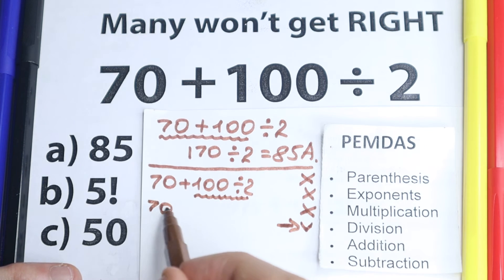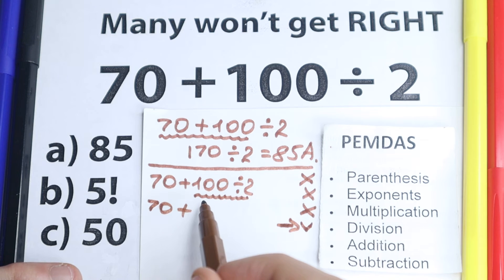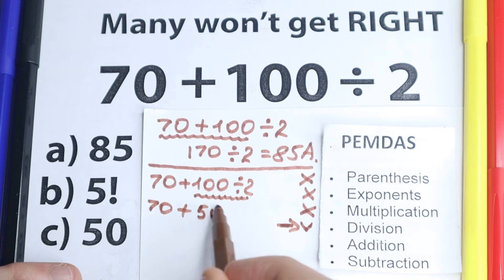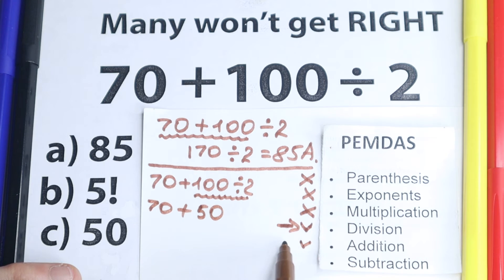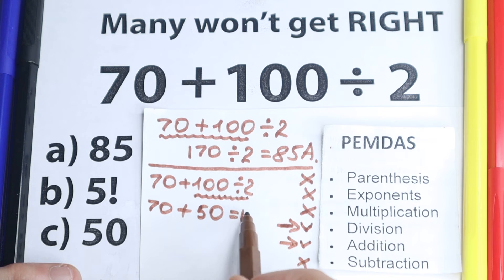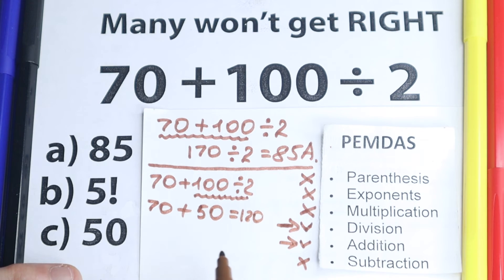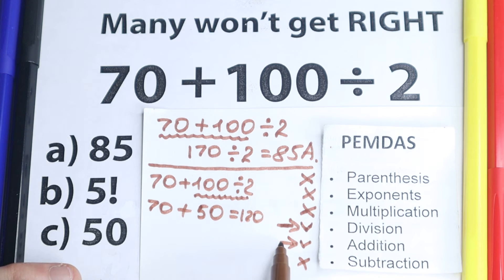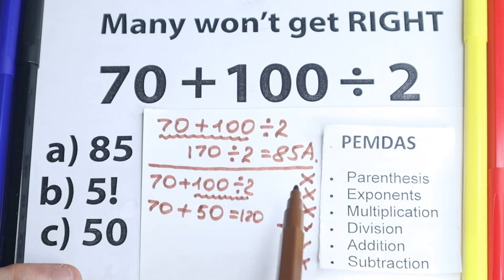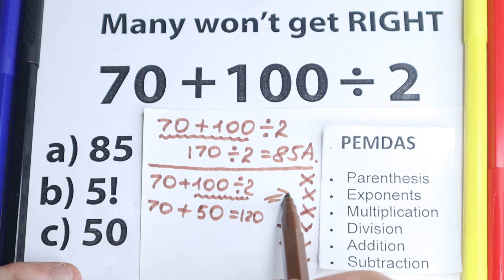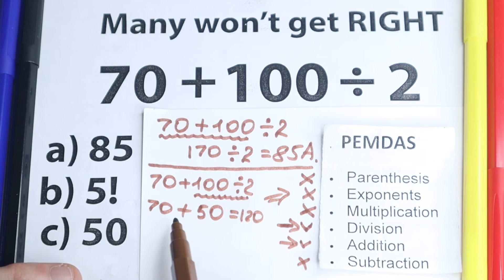100 divided by 2 equals 50. So we now have 70 plus 50. As our last step we handle addition — 70 plus 50 equals 120. In simple words: do the division first, then add the numbers. Division is before addition. This is the correct solution according to PEMDAS, which gives the correct answer of 120.